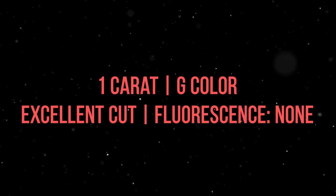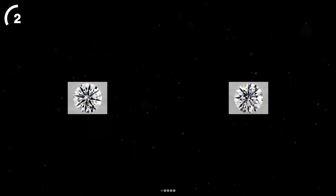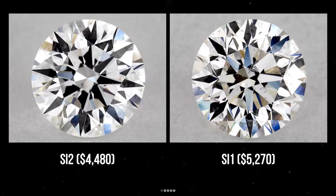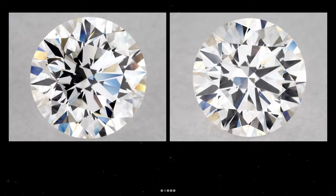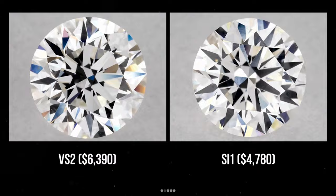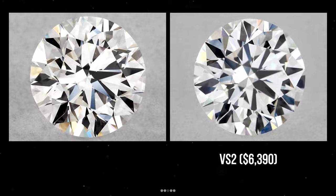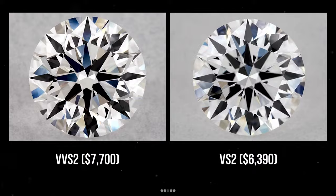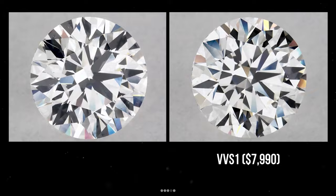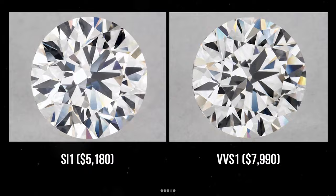Which one has higher clarity? On the right we have an SI1 diamond, while on the left we have an SI2 diamond — if you choose the diamond on the left, you can save $790. Next: on the right is an SI1, on the left is a VS2 — choosing the SI1 on the right saves you $1,610. Then: on the right is a VS2, on the left is a VVS2 — choosing the VS2 on the right saves $1,310. On the right is a VVS1, on the left is an SI1 — choosing the SI1 saves $2,810. Finally, on the right is an FL diamond — the highest clarity grade — while on the left is a VS2; choosing the VS2 saves $2,130.